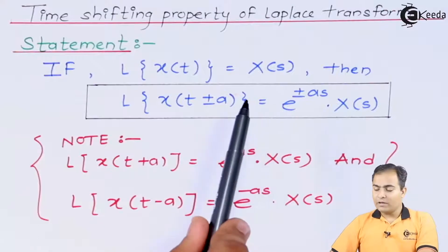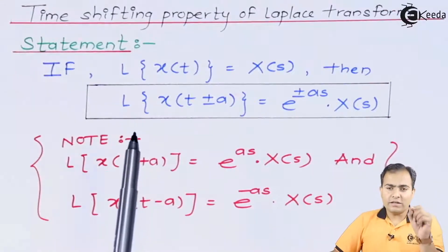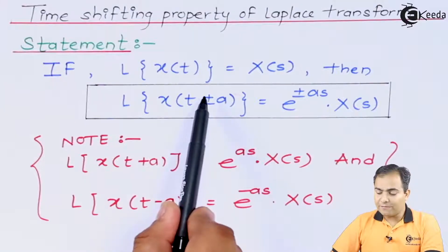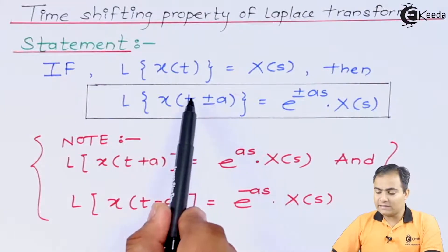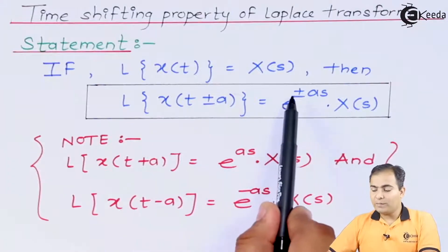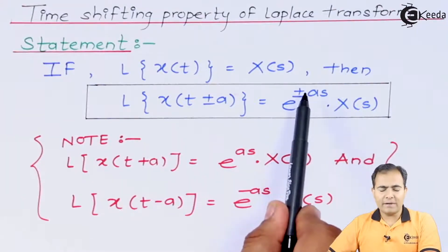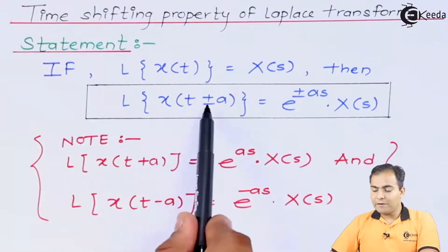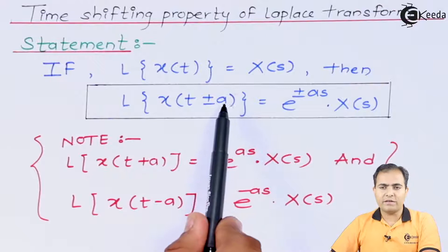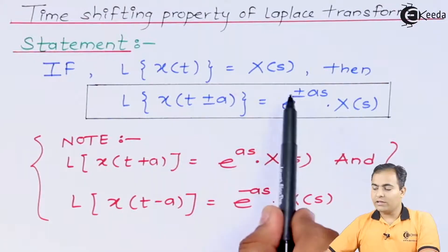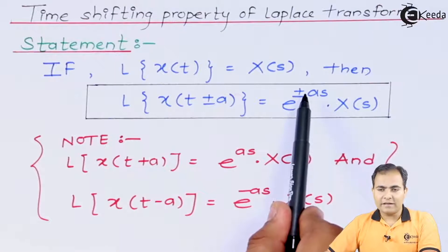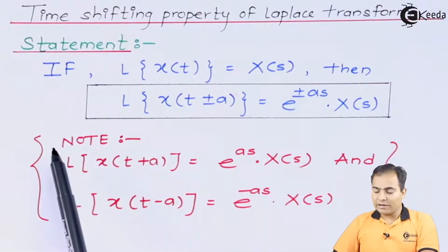One thing you should know: if we place a plus sign inside the bracket, then at the end e to the power should have plus as. If we place a minus sign between the time variable and the integer value or delay, then you will get a minus sign in the power of a. That's why I have written a note.